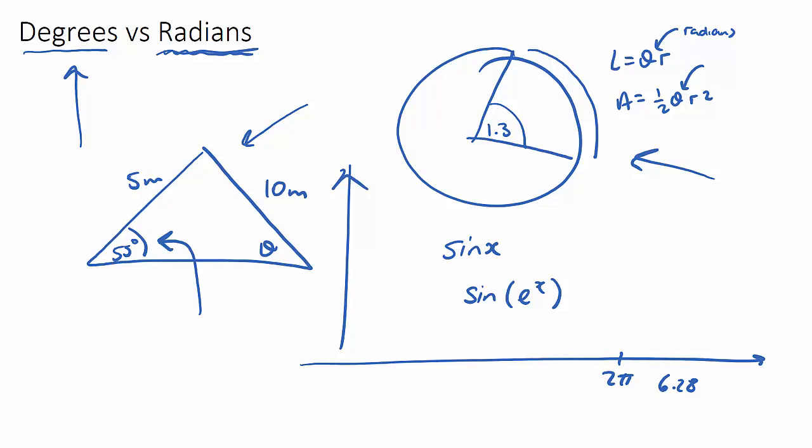As a quick summary, my rule of thumb: be in radians by default for both your calculator and your graphing section, unless you come across a triangle question where you need to use the sine and cosine rule - then flip it back to degrees mode. Good luck.